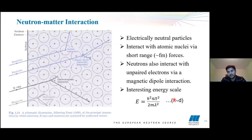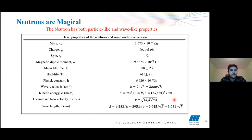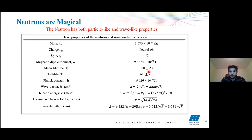Neutrons have a very interesting energy scale. They have both particle-like and wave-like properties — that's why neutrons are magical. The basic properties of neutrons include a neutral charge, spin one-half, and a lifetime of 880 seconds plus minus 2. Other values include the Planck constant and the wave vector, which equals 2π over lambda. The wave vector represents the momentum. Kinetic energy is ½mv², which also equals kBT, where kB is the Boltzmann constant. We can also calculate the thermal neutron velocity and wavelength with these formulas.